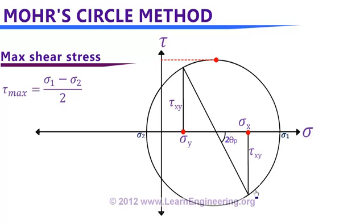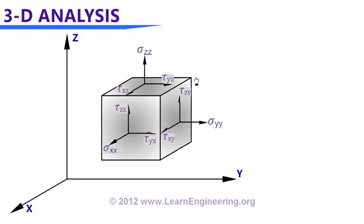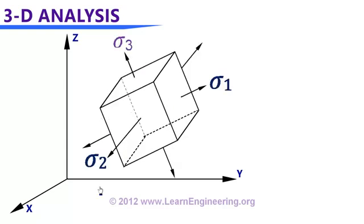Now let's move to the 3D problem. In 2D cases we do stress analysis on a square, but in the 3D case, instead of a square it will be a cube. The stress values at the boundary of this object include three normal stress components and six shear stress components. In the 2D problem we deduced a principal square inside the object comprising principal planes. Similarly, in 3D we can deduce a principal cube comprising principal planes inside the object. In the 3D case there are three principal stresses: sigma 1, sigma 2, and sigma 3. The maximum principal stress is denoted sigma 1 and the minimum is sigma 3, and shear stress values on all principal planes are zero.